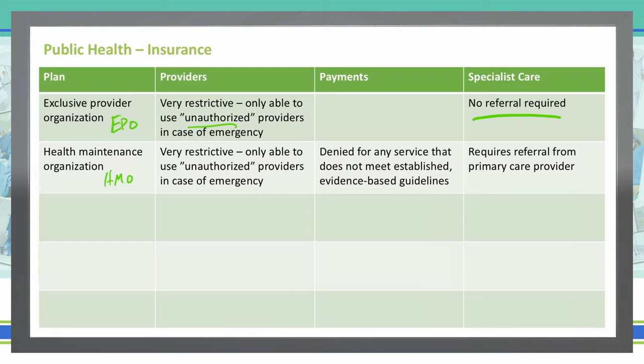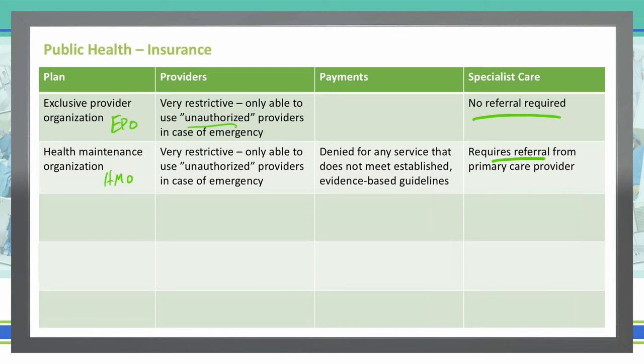One benefit of an HMO is they tend to save you money over a long period of time, especially if you're not using the healthcare system very much. They pay physicians only based upon strict evidence-based guidelines, so if you get treatment that is not supported by evidence-based medicine, they will not pay for that treatment. One con for an HMO is that it does require a referral — you have to go to your primary care physician to get a referral to see a specialist.